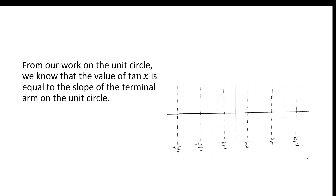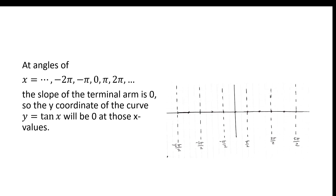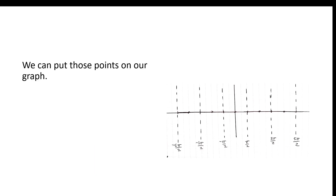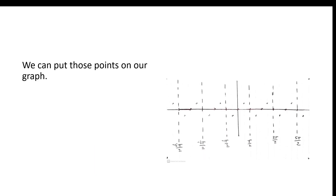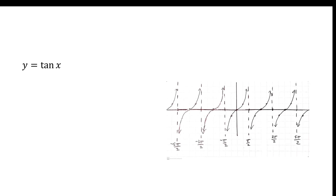Now we remember that the value of tan x is equal to the slope of the terminal arm. At angles of negative 2 pi, negative pi, 0, pi, 2 pi, etc., the slope of the terminal arm is 0, so we can put those points down. The slope of the terminal arm is 1 at certain values and negative 1 at certain other values, so we can put those points on our graph. We can treat asymptotes like asymptotes and graph the curve. That's what the curve of y equals tan x looks like.